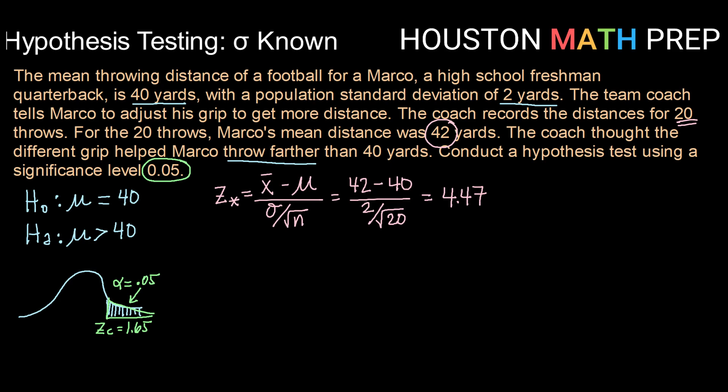So once we have that test statistic, we want to see, does that fall into our rejection region or does it fall below the rejection region? So 4.47, if this score right here is our Z-critical of 1.65, 4.47 would be way, way, way out here. So that is definitely in our rejection region. So our decision is going to be to reject our null hypothesis.